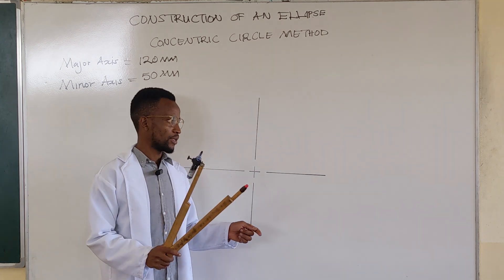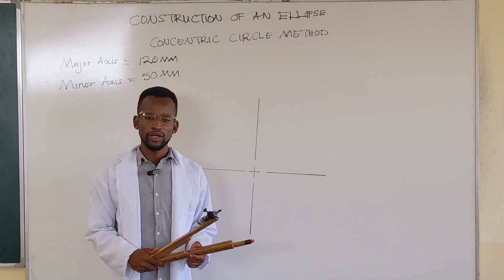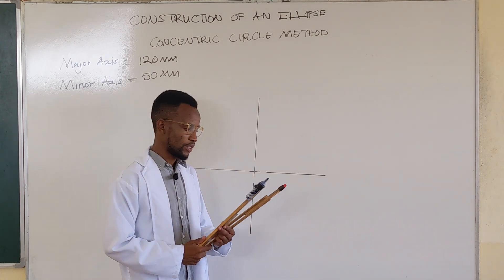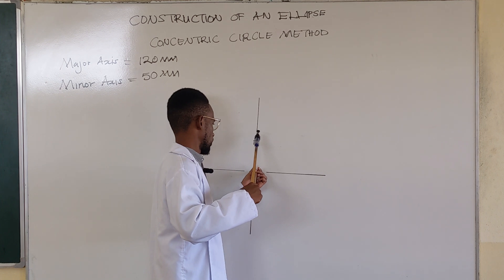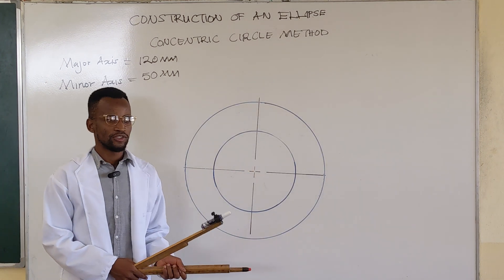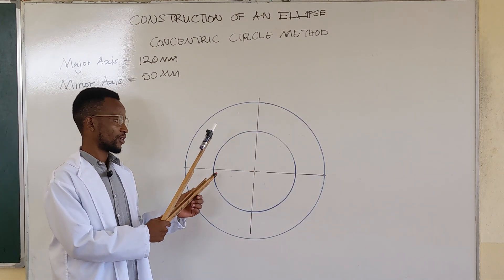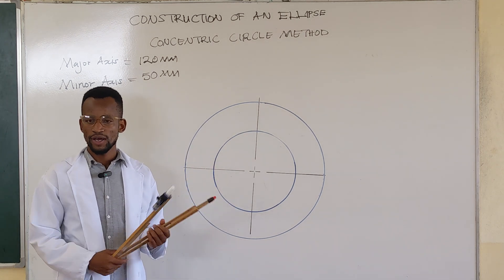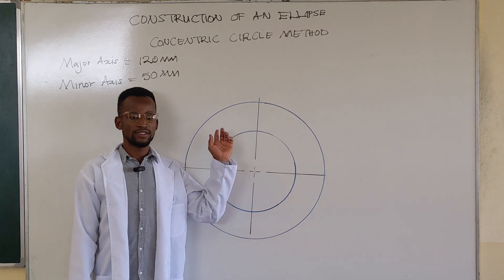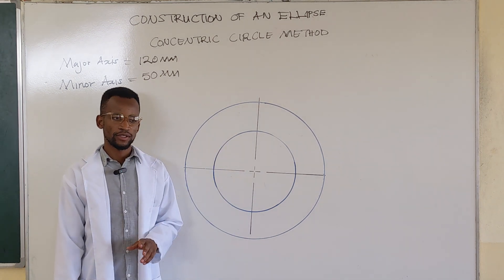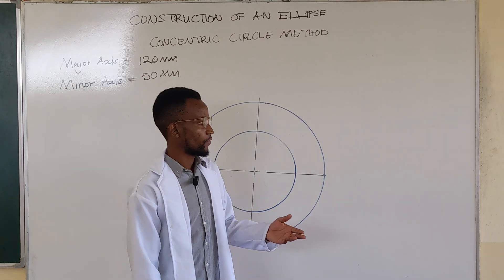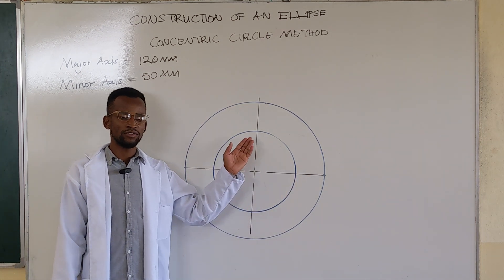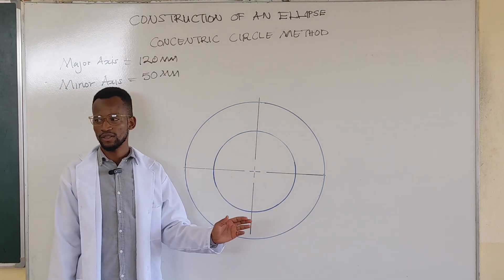After creating your center lines, you draw a circle from this center of radius 25, and from the same center, another circle of radius 60 millimeters. After drawing the two circles — one representing the major axis and the other the minor axis — you want to divide these circles into a number of equal parts. The center lines have already divided the circles into their quadrants, four equal parts.